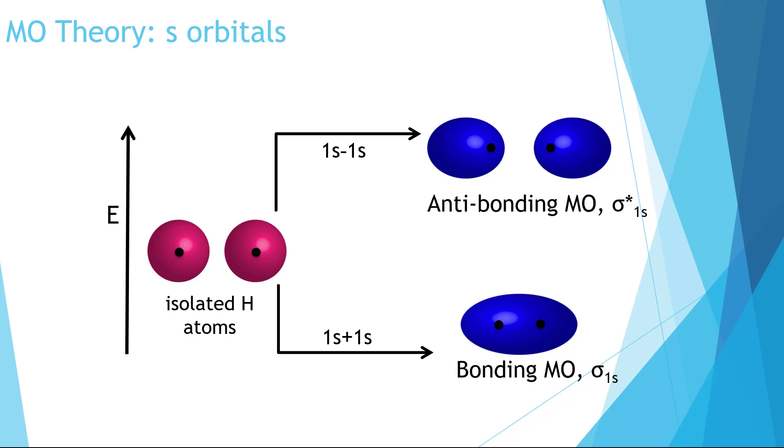The last part of the nomenclature to discuss is the subscript. We put a 1s here to show us the orbital that it came from. It originated from the 1s orbitals.